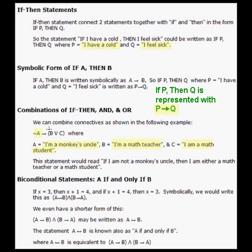We have the statement that says negation of A, IF negation of A, THEN B or C. In words, this would be if I am NOT a monkey's uncle, because we have the NOT, THEN I am either a math teacher or a math student. With a little practice you'll get the hang of this. Maybe go to the text and do some additional problems that deal with combinations of statements like this.